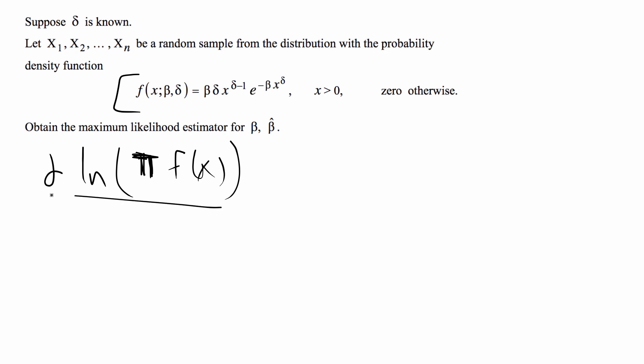Then you take the partial derivative with respect to whatever parameter you're trying to estimate. In this case it's going to be partial of the likelihood function partial beta, and we set that equal to zero, and then you basically solve for beta and whatever the solution is is your maximum likelihood estimate.